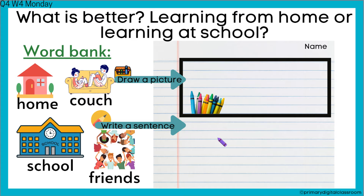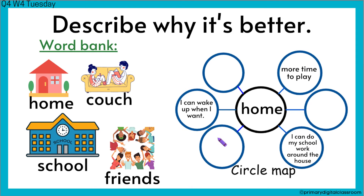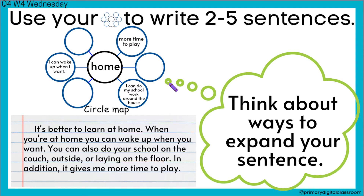So you might say, learning from home is better than school, or learning at school is better than home. Then what you're doing is a circle map to describe why it's better. You're coming up with three, four, or five reasons to describe why it's better.